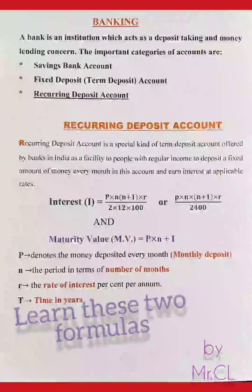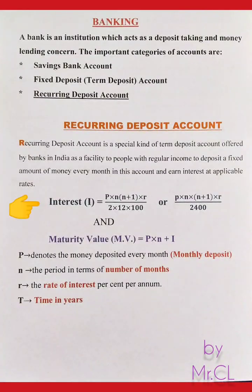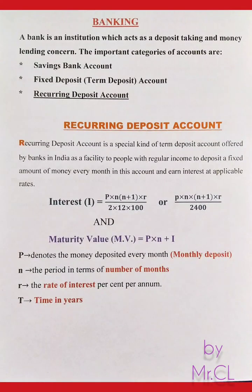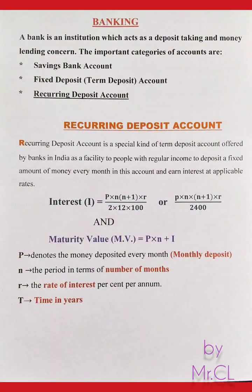To solve word problems of the exercise of this chapter, we will use two formulas. Formula 1: Interest I = P × n(n+1) × R ÷ (2 × 12 × 100), also written as P × n(n+1) × R ÷ 2400. Formula 2: Maturity Value MV = P × n + I.